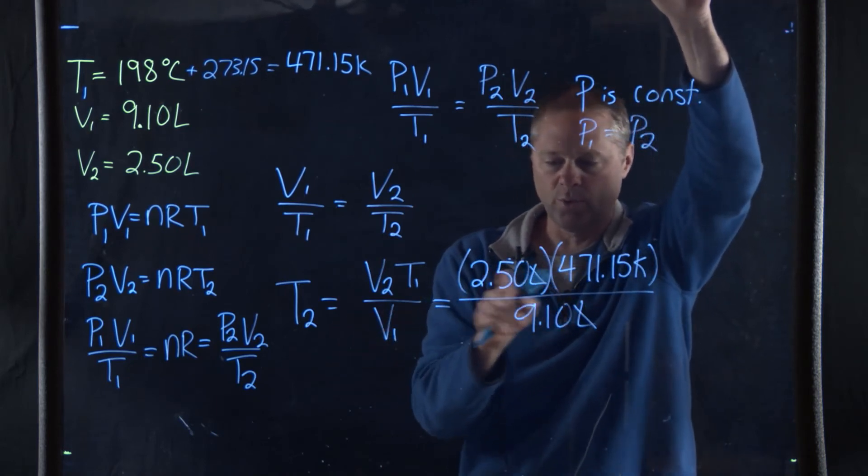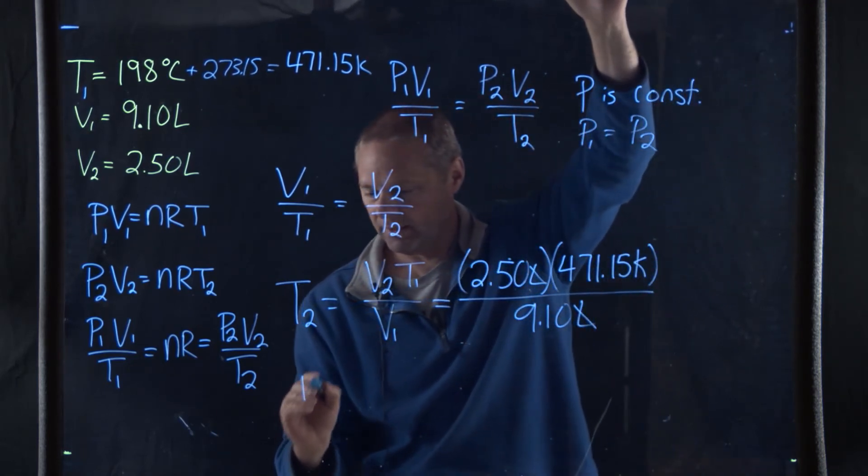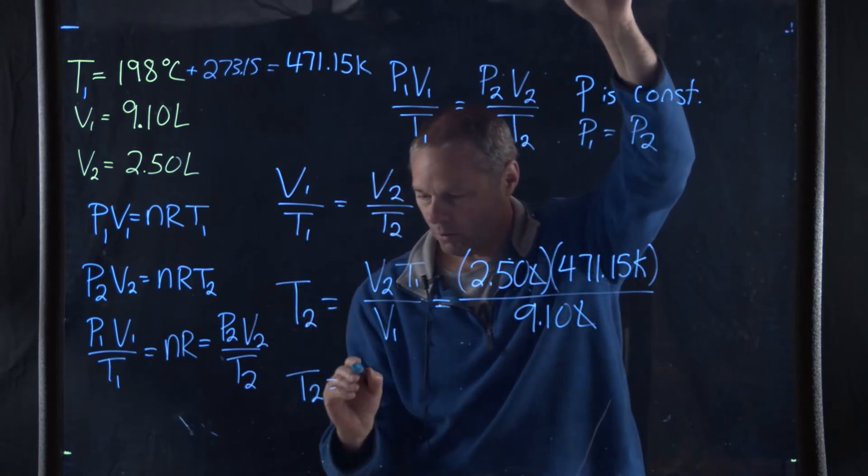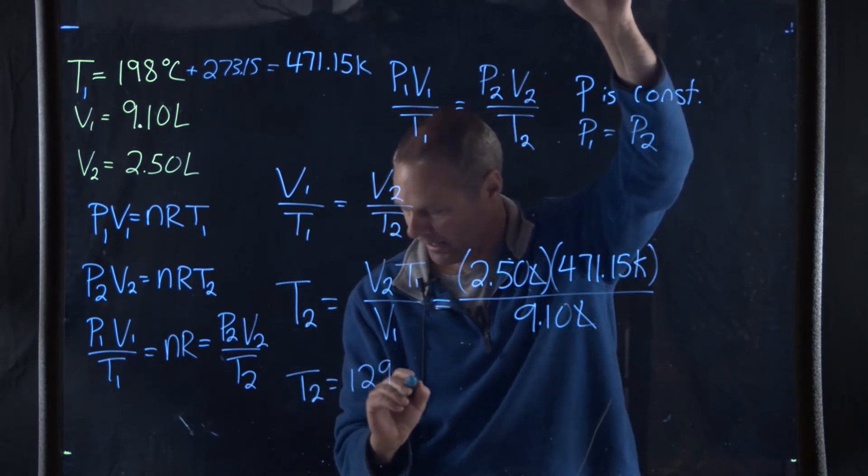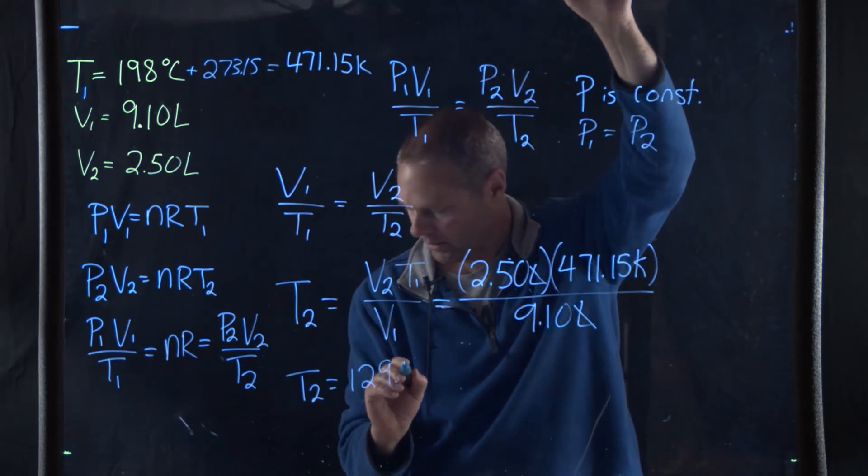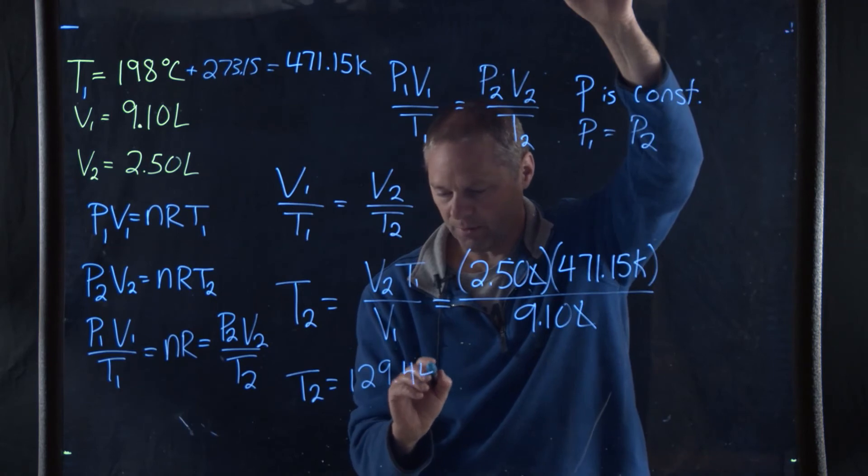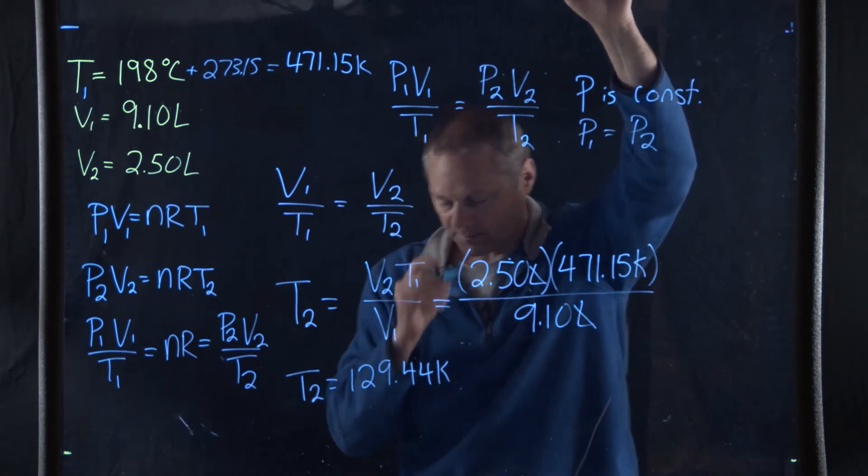We simply do this arithmetic here, and we find out that T2 is equal to 129.4 Kelvin.